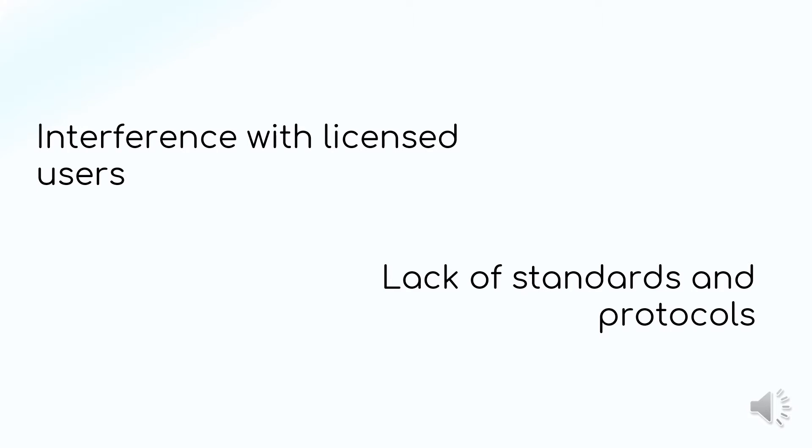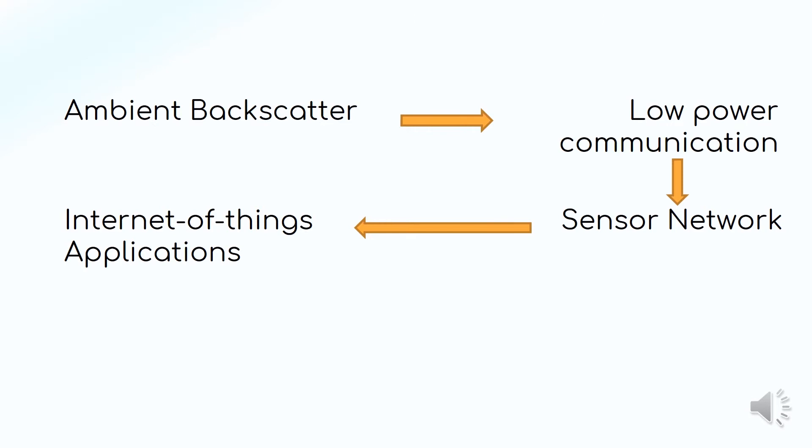There were two main problems found during our investigation: interference with licensed users, meaning the data can be stolen, and the lack of standards and protocols. To summarise, we discussed the principles of ambient backscatter and found that it is a low-power device that can be integrated into a sensor network, giving birth to a range of applications such as the Internet of Things.